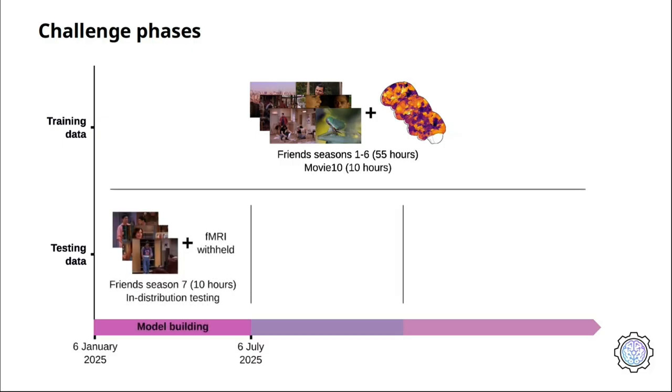The first challenge phase is the model building phase, which will run for six months from January 6 until July 6. During this phase, you can train your encoding models using the challenge training data and test them in distribution on season 7 of Friends, for which the corresponding fMRI responses are withheld.